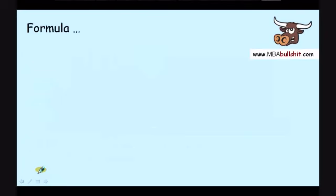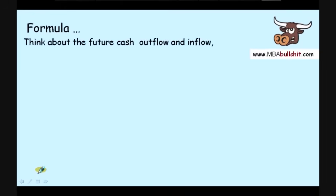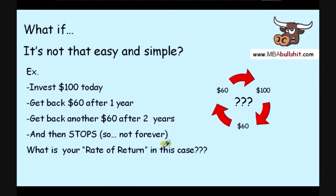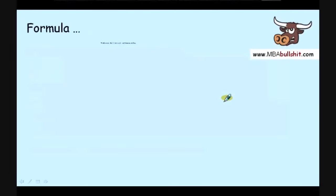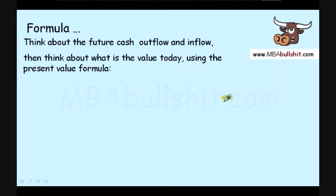Now, in order to get the internal rate of return, we need to use a formula. But before we go to the formula, I want you to first think about the future cash outflow and the future cash inflow. Remember, the future cash outflow was the $100 that you're investing and the cash inflow was the $60 that you get. So, the outflow was $100, the inflow is $60 and another $60. Think about the future cash outflow and inflow and then think about the value today using the present value formula.